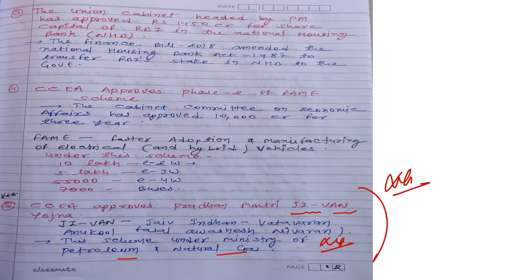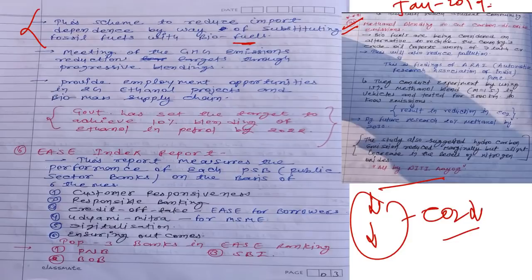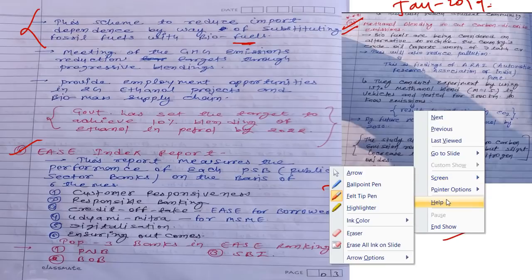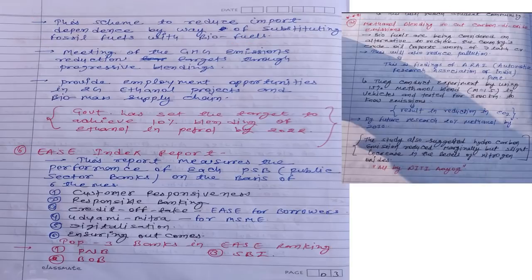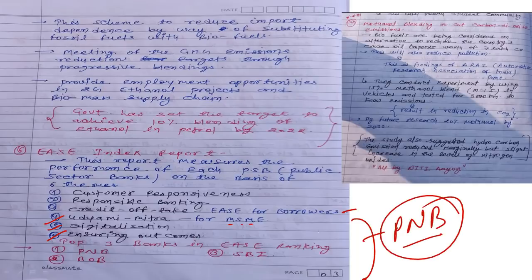Sixth current affair: the EASE Index Report is published by PSBs (Public Sector Banks) on six themes — customer responsiveness, responsible banking, credit offtake (ease of providing loans), support to MSMEs through Udyami Mitra, digitalization, and ensuring outcomes. PNB ranked as the top bank, followed by Bank of Baroda and SBI.